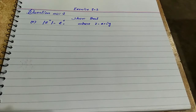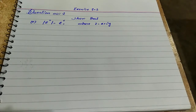Welcome dear students. Today is our Complex Numbers Maths B course, lecture no. 43, Exercise 1.3, Question no. 1 — it has 7 parts total. The first two parts we covered in our previous lecture no. 42, and in today's lecture we will see the remaining parts.